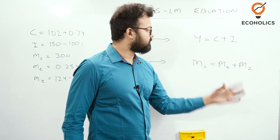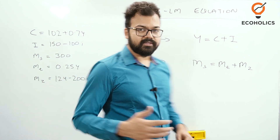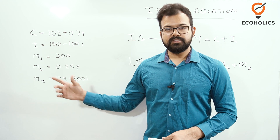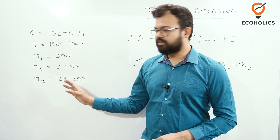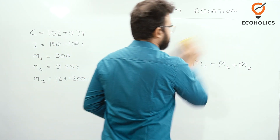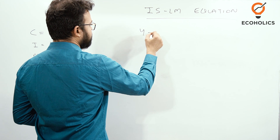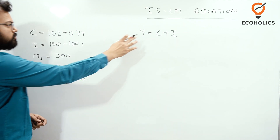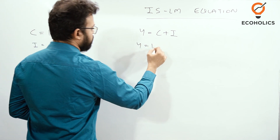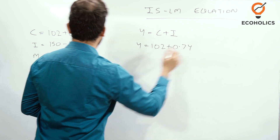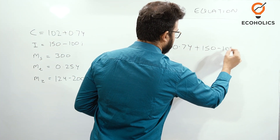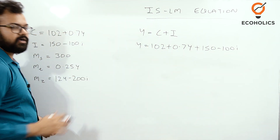The equilibrium position is Ms = Mt + Mz. This type of question is very common in examinations — computer exams, semester exams related to economics. We'll see how we can solve and tackle it. The values will be given in the question. We substitute these values into the equilibrium position. Starting with the commodity market: Y = C + I. In place of C we write the full equation, and in place of I we write that equation: Y = 102 + 0.7Y + 150 − 100i.